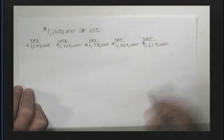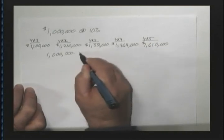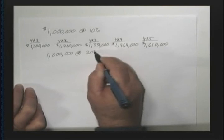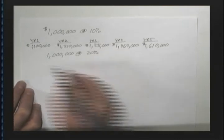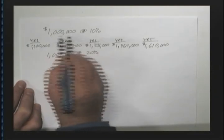Now, if we had taken the same million dollars and invested it at 20%, then at the end of year one, it would have been 20% of a million dollars.